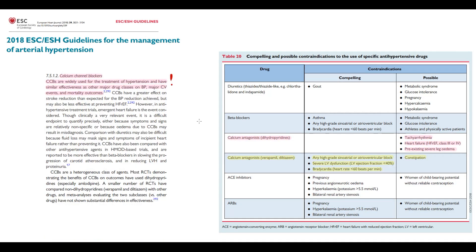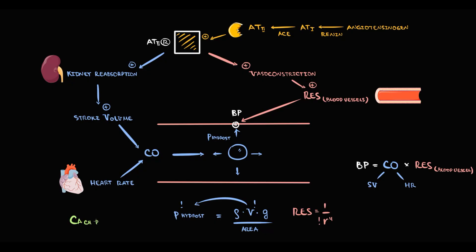The next class of antihypertensive drugs is calcium channel blockers, which are very popular agents. There are two major subgroups: central calcium channel blockers — verapamil and diltiazem — and peripheral calcium channel blockers, the dihydropyridines. The major effect of central calcium channel blockers, verapamil and diltiazem, is a decrease in heart rate.